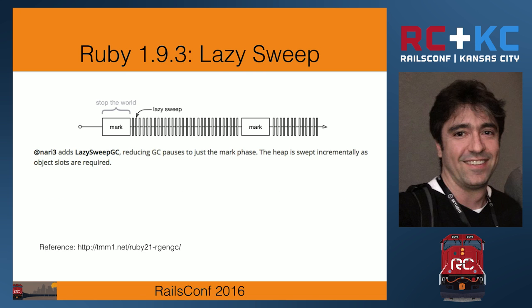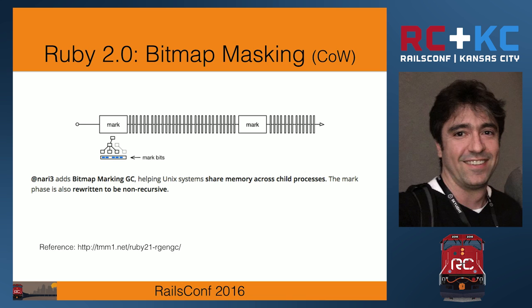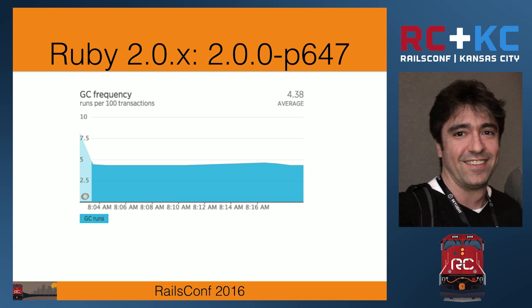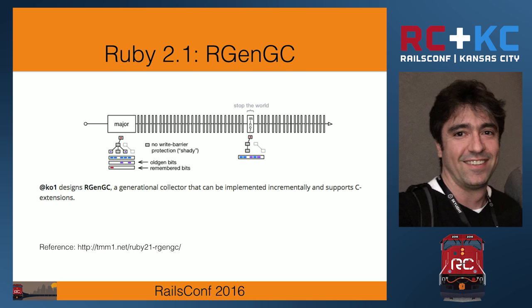1.9.3 is the lazy sweep. The main difference is the mark phase is still the same, but the sweep is done lazily — as objects are required, they are released and made available for you to use. 2.0 adds bitmap marking, which is mainly about improved memory management for gems and applications that use fork. The mark phase is also rewritten to be non-recursive. The main mark-sweep logic remains the same. If you plug a 2.0 application into one of these fancy monitoring tools, you see just GC runs. This is from a simple application I have on my machine.